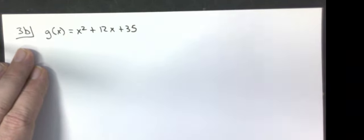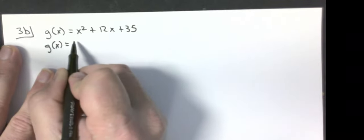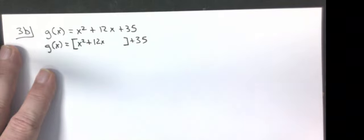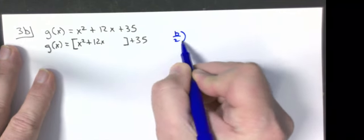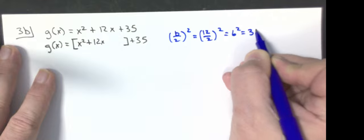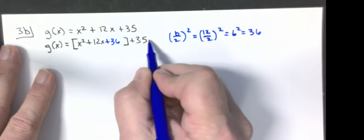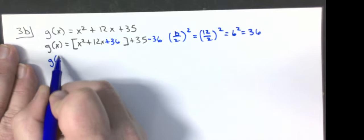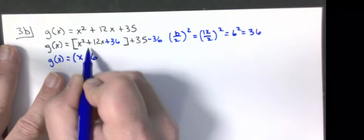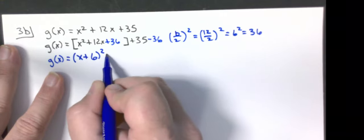Problem 3B: complete the square on x squared plus 12x plus 35. I compute b over 2 squared: 12 over 2 squared equals 6 squared equals 36. I add 36 inside and subtract 36 to compensate. Factoring the perfect square gives x plus 6 quantity squared, and 35 minus 36 is negative 1. So the result is x plus 6 squared minus 1.